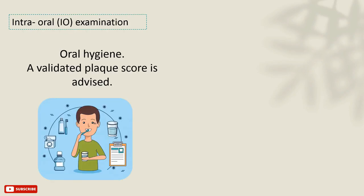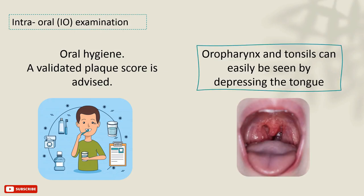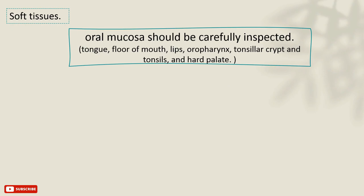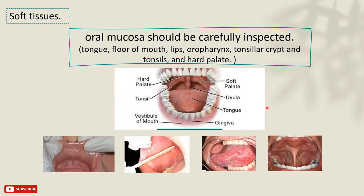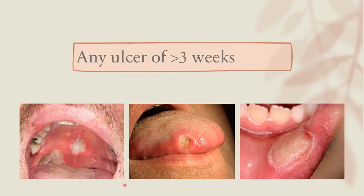Then move to the intraoral examination. The first thing to notice is the oral hygiene of the patient, and you can use a validated plaque score. The oral bearings and tonsils can be easily inspected using a tongue depressor. Carefully inspect the soft tissues: the oral mucosa should be examined thoroughly, including the tongue from all sides — dorsum, ventral, and lateral — the floor of the mouth, the lips, the oropharynx, the tonsillar crypts and tonsils, the hard palate, and the labial and buccal mucosa. Pay great attention to mouth ulcers and ask the patient when they started, because long-lasting mouth ulcers — over three weeks — can be a sign of malignancy.